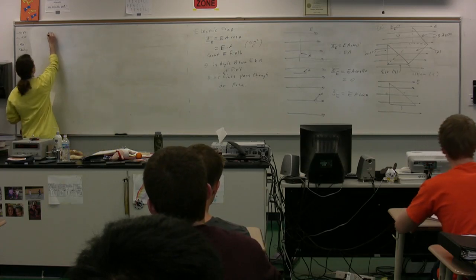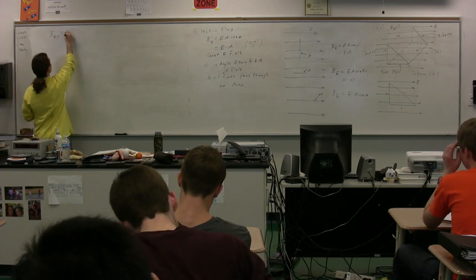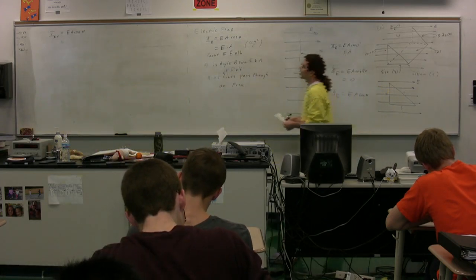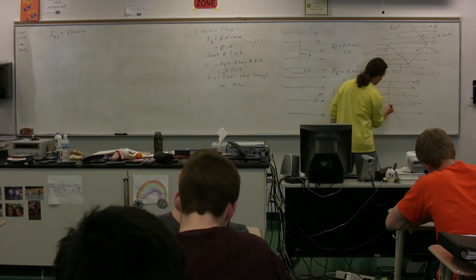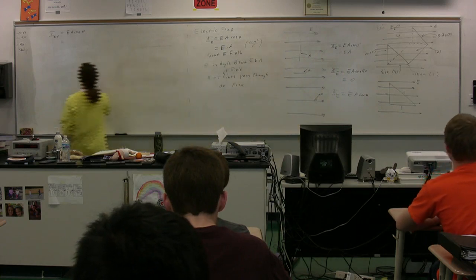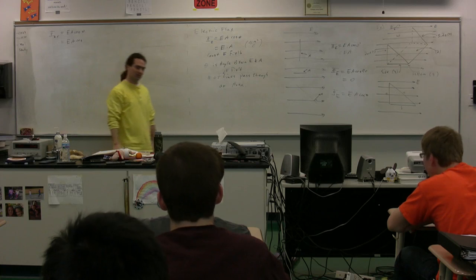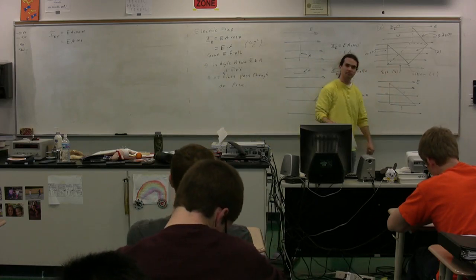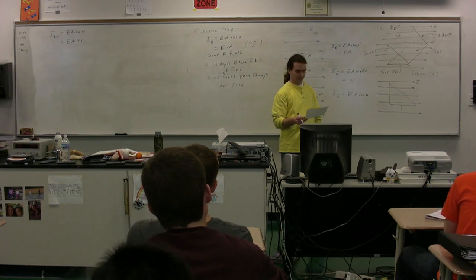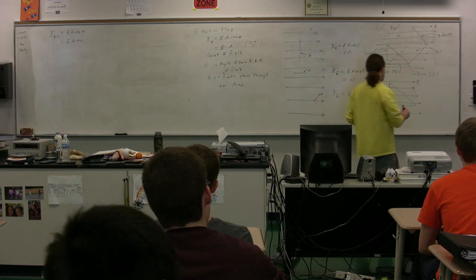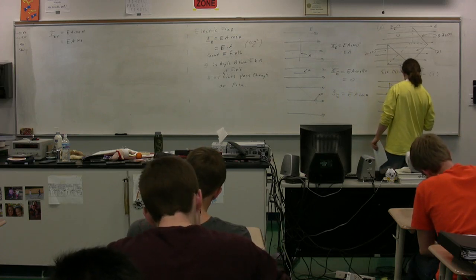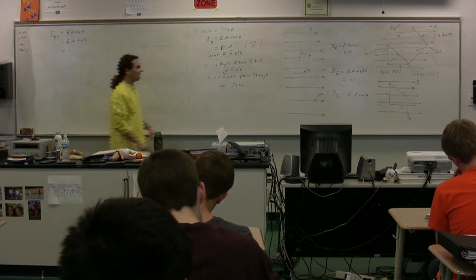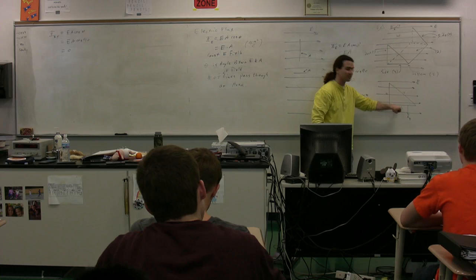First, the electric flux that passes through side 5 is E times A times cosine theta. Side 5 is the bottom. The area vector for side 5 points down, so the angle is 90 degrees. So the electric flux through side 5 is zero — no electric field lines pass through that surface.